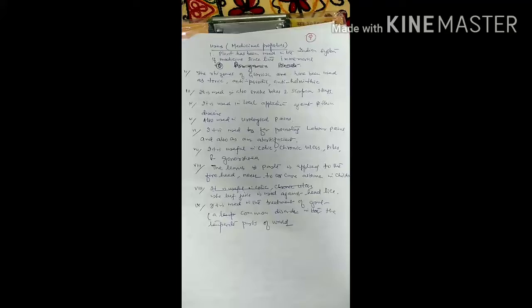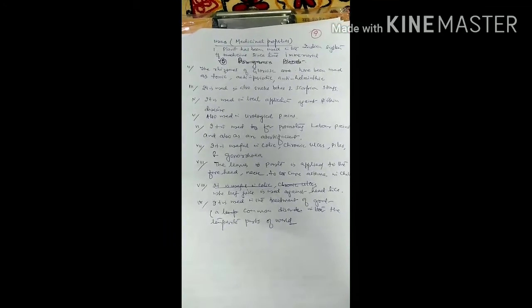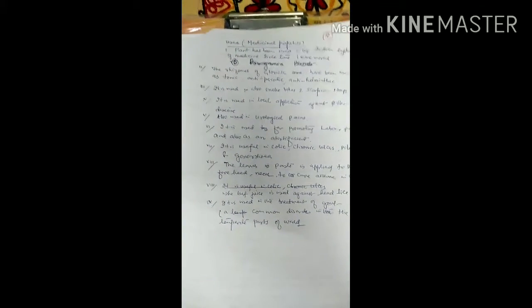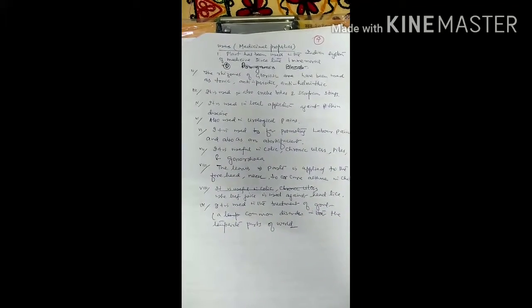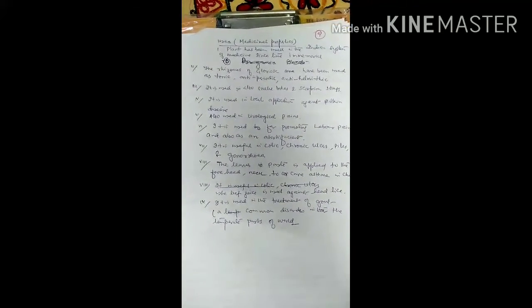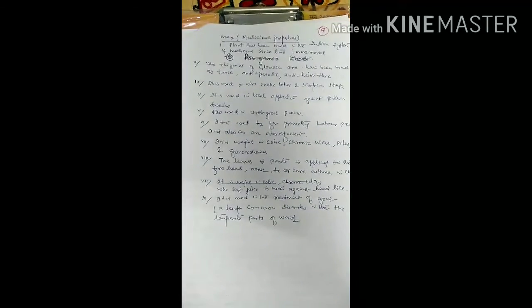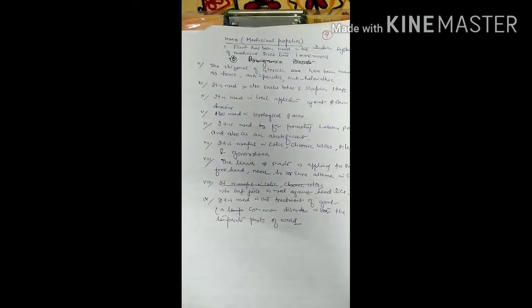It is used for promoting the labour pain and also as abortifacient. It is used with colic and chronic ulcer, piles and gonorrhea. The leaves paste is applied to the forehead and neck to cure the asthma in children.